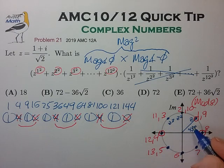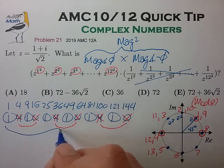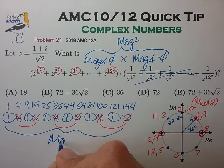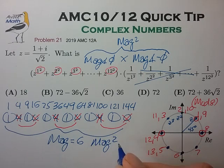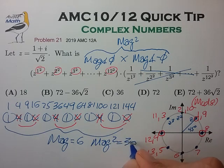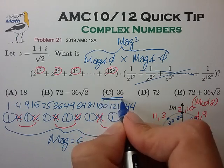And what we'll be left with are six complex numbers all pointing in the same direction. And when we sum that, the magnitudes will just add for a grand magnitude of six, such that the magnitude squared is 36 for choice C.